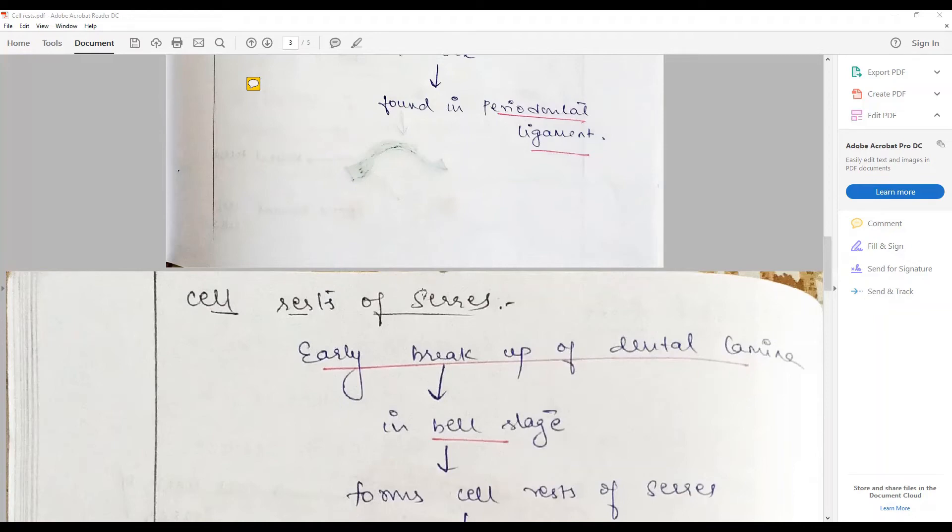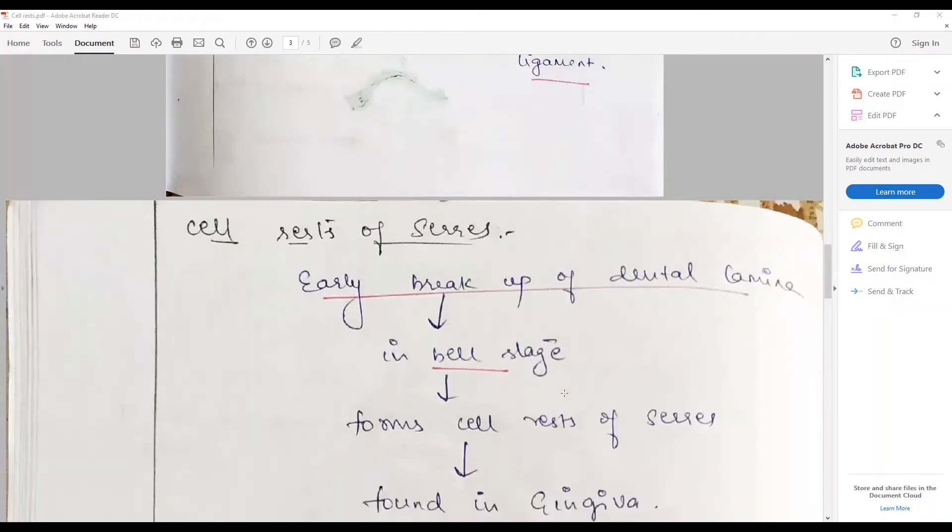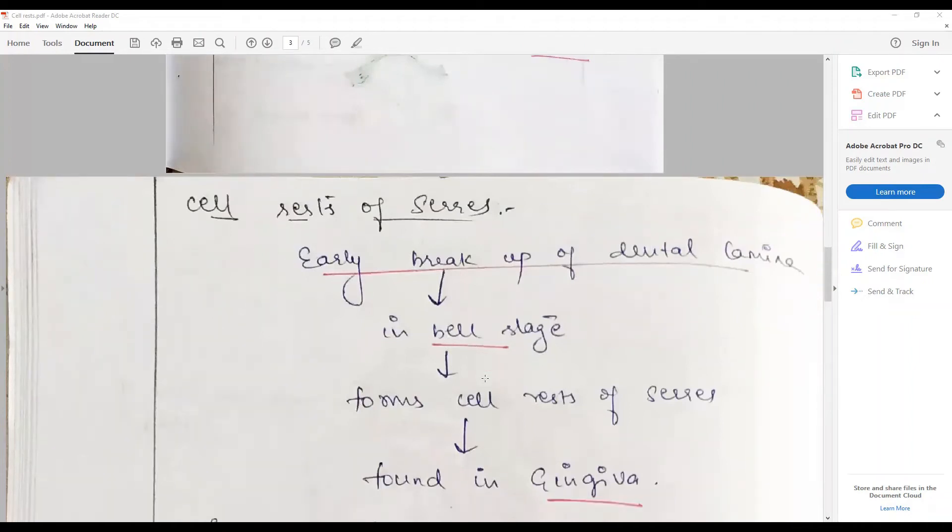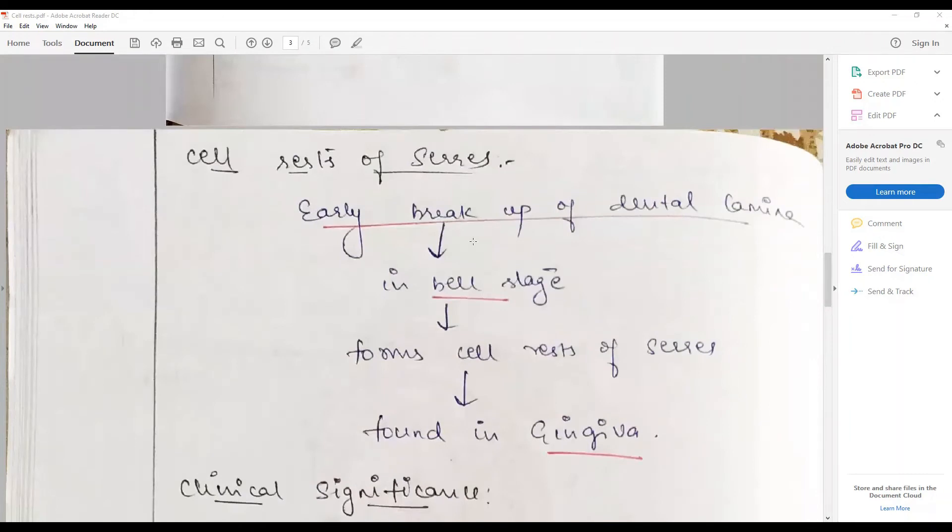And some of these cells may survive in the gingiva. Whereas Malassez is in the periodontal ligament, Serres is in the gingiva, nearer to the oral mucosa. They may survive to adulthood and persist as cell rest of Serres.